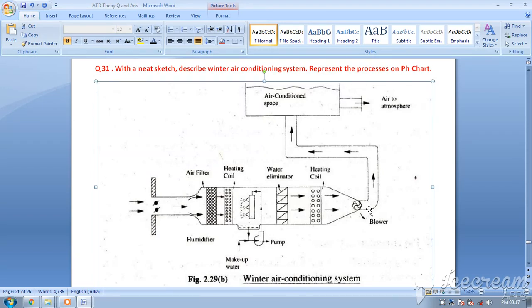This is the winter air conditioning system where we have heating as well as humidification to get the desired comfort condition. Please remember, wherever you find adiabatic humidification, next to it you will have a water eliminator. At the entrance you will have a damper, at the end a blower, and there will be an air filter. These are standard things in all air conditioning systems.